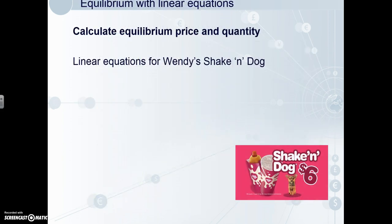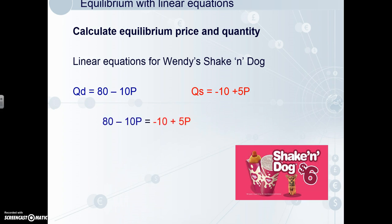Given that we've got linear demand and supply functions, we now have to be able to calculate equilibrium price and quantity. Nothing complicated here — we just get the two equations. These are the demand and supply equations for a Wendy's shaken dog deal. We combine them: 80 minus 10P equals minus 10 plus 5P. Some simple maths to solve for P and we get price equals $6. Then we substitute the 6 into either equation and get our equilibrium quantity. I've done it with the demand function, but you get the exact same result using the supply function.